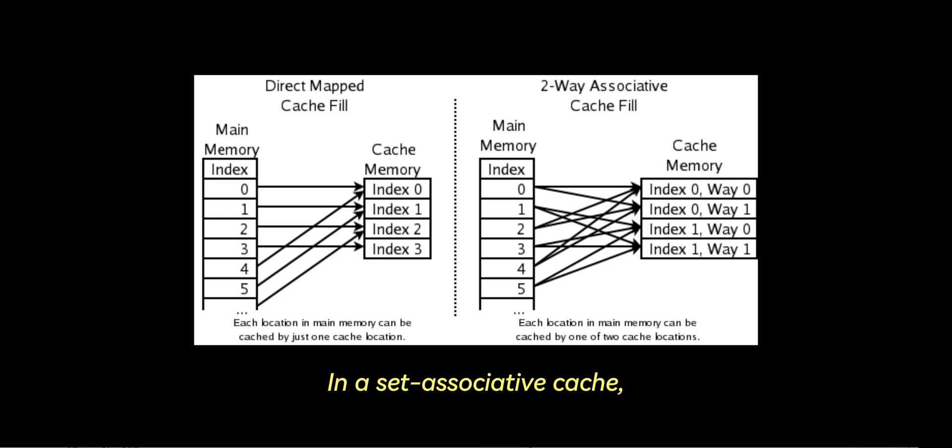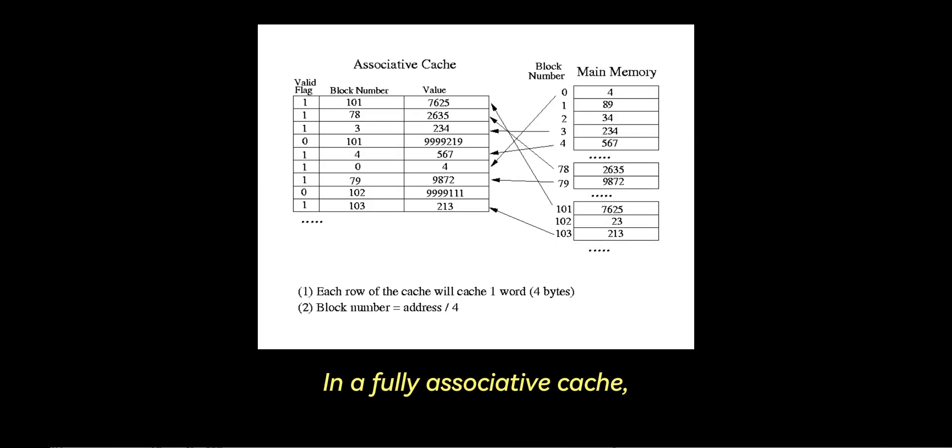In a set associative cache, memory blocks can map to several different lines within a set, reducing conflicts. In a fully associative cache, data can be placed anywhere in the cache, giving the greatest flexibility but the highest lookup complexity.